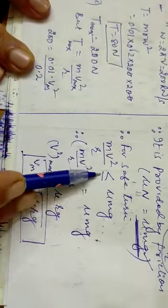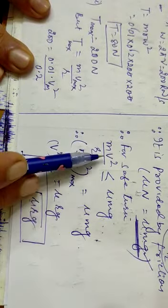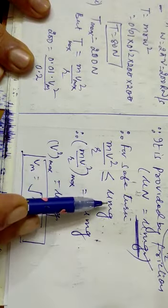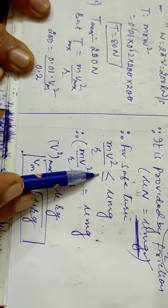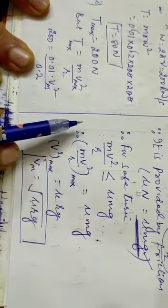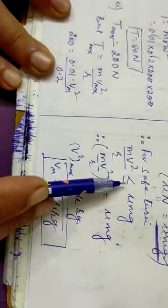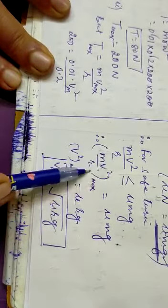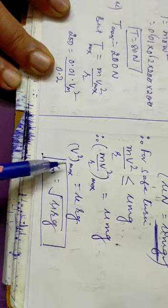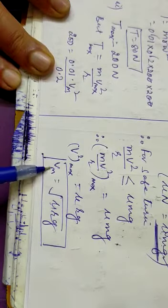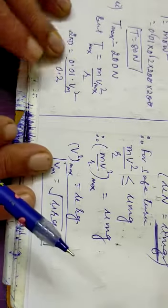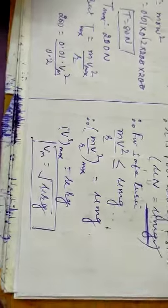mV squared upon R less than or equal to μmg. The requirement is less than or equal to available. This is a safe turn condition. The maximum value occurs when they are equal. This is the maximum value. From this, I will find the maximum speed of the vehicle. V max equals square root of μgR. This helps me.